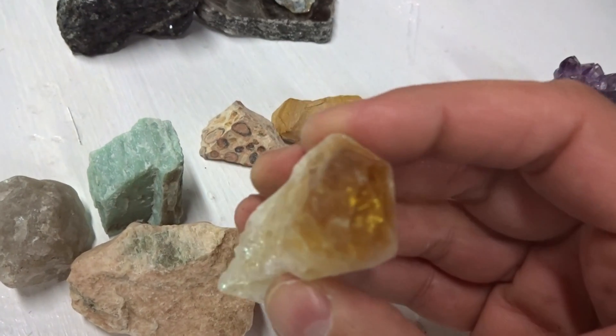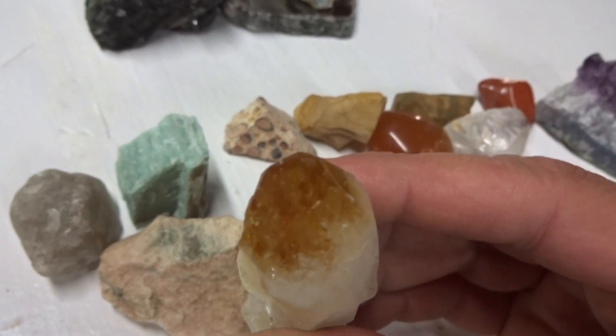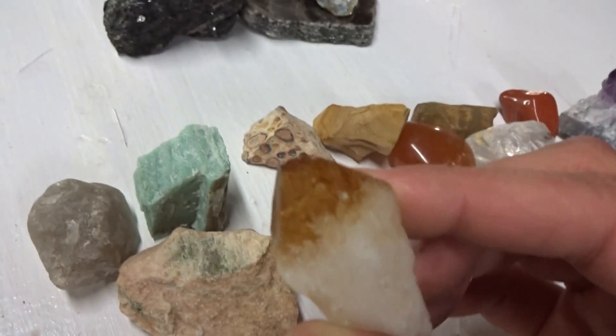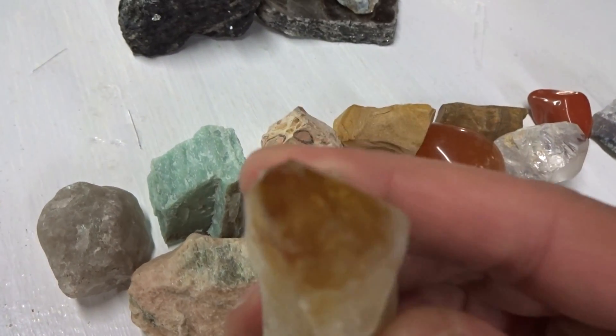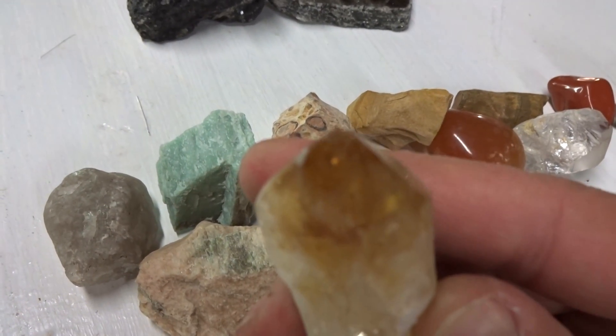This is citrine. Citrine is also colored in orange color because of iron.